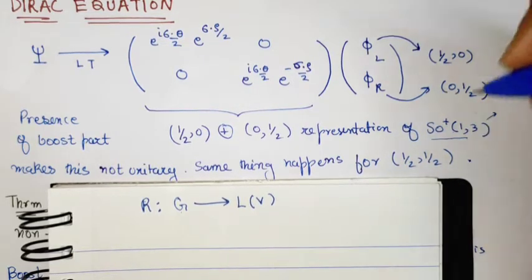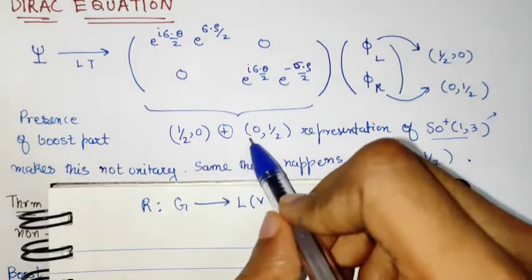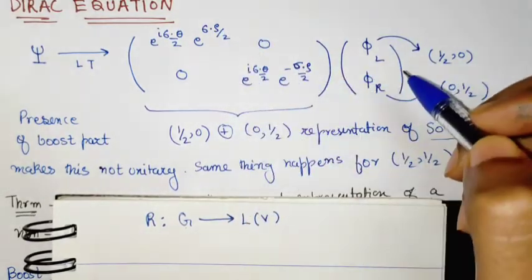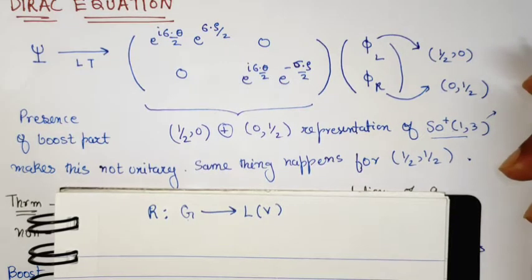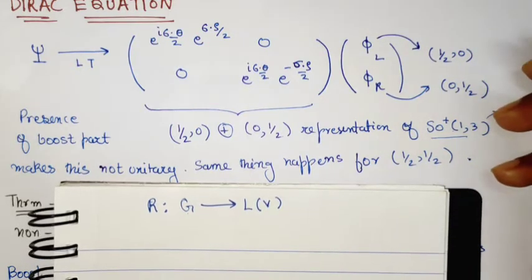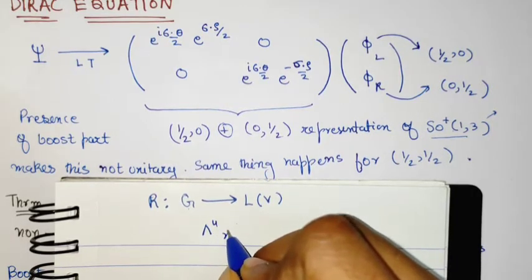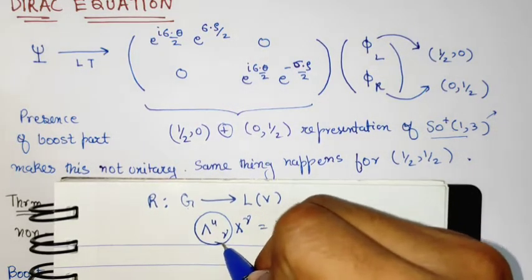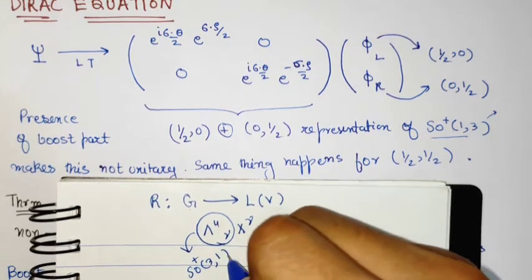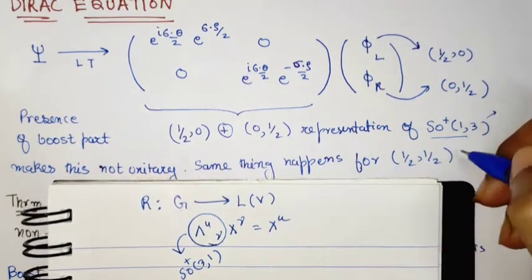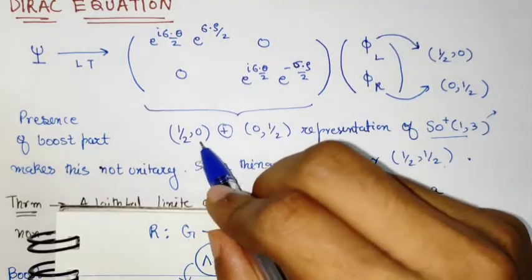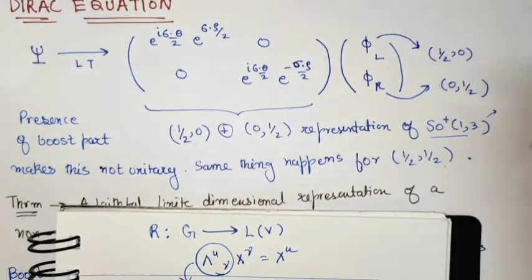In the previous video, we saw that this is an SU(2) direct product SU(2) representation, and further that there are different kinds of representations of the same group, SO+(1,3) — that is, proper orthochronous Lorentz transformations. For this same group, we can have the ordinary lambda-mu-nu X-nu transformation. This lambda is also a representation of SO+(1,3), and this is what we call the (½, ½) representation, because it breaks into the direct product of two SU(2) representations.